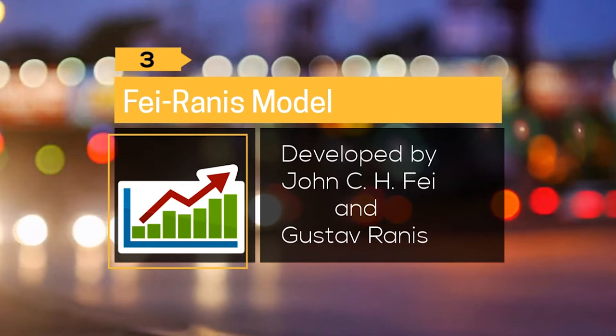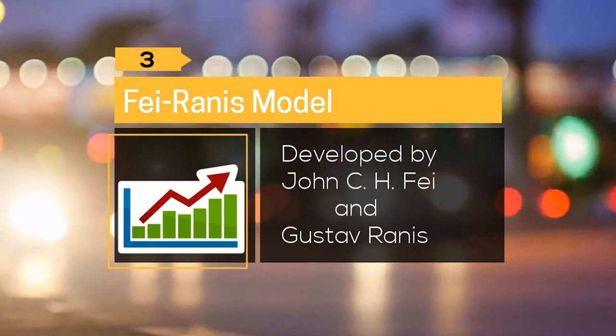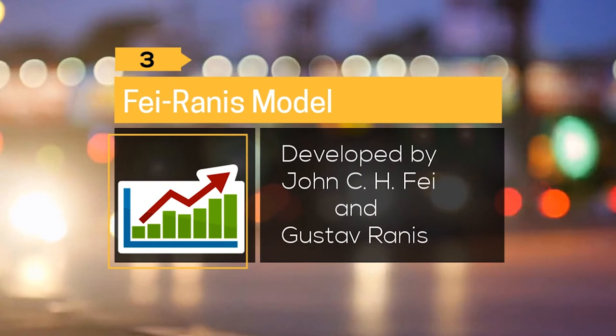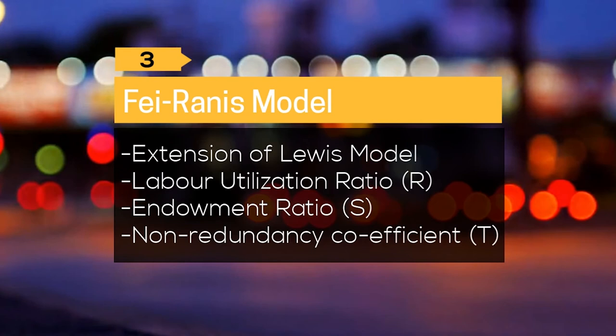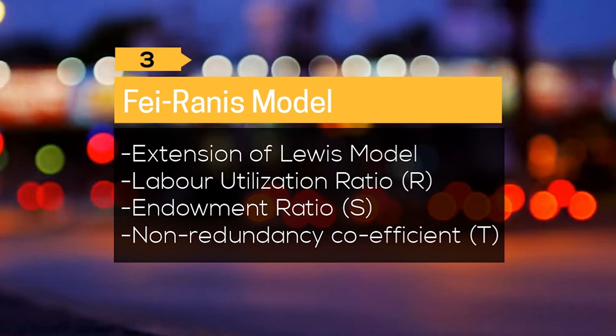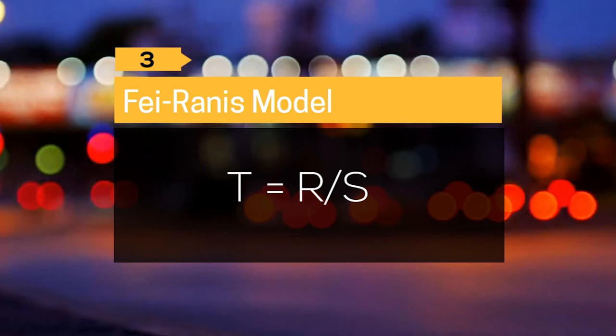The Fei-Ranis model is a dual model developed by John C. H. Fei and Gustav Ranis. It is an extension of the Lewis model, or dual sector model, named after inventor W. Arthur Lewis. Fei and Ranis developed three important concepts: labor utilization ratio, endowment ratio, and non-redundancy coefficient. The mathematical relation between these three concepts shows that the non-redundancy coefficient is directly proportional to the labor utilization ratio and inversely proportional to the endowment ratio.